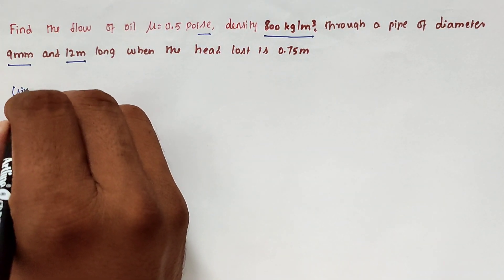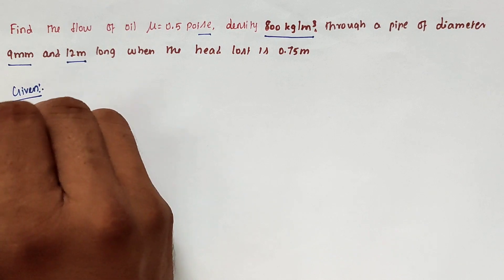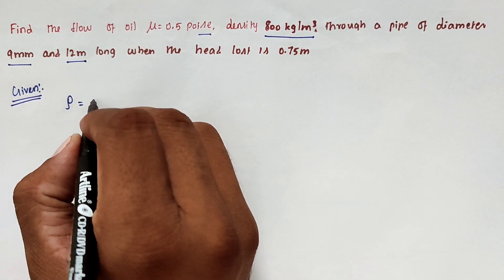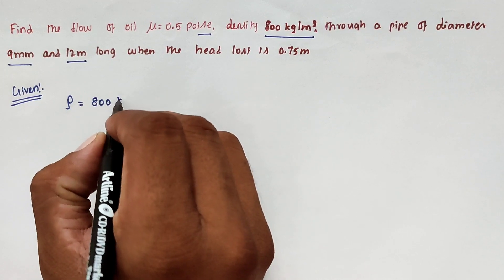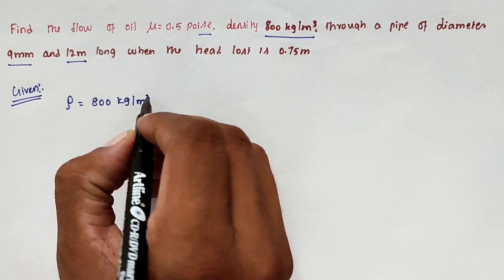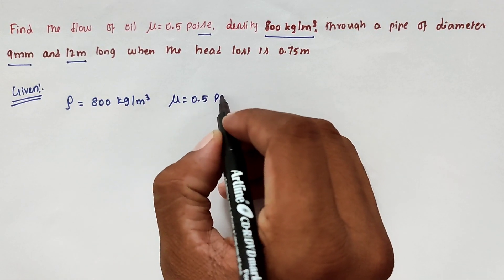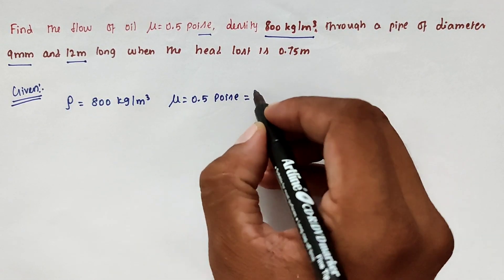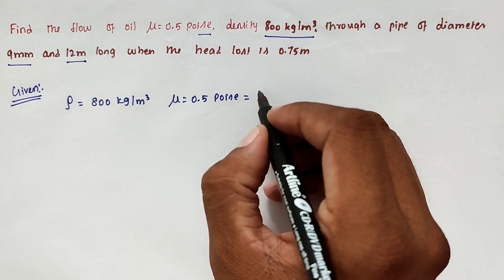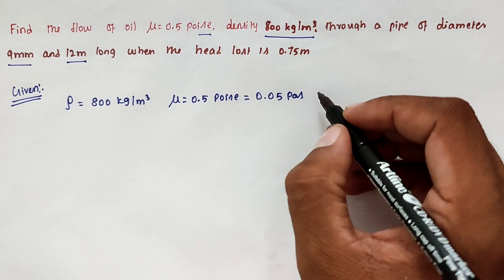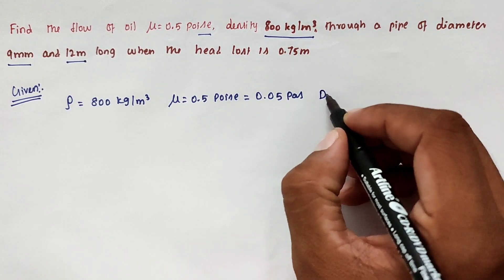So the given values: ρ equal to 800 kg per m cube, then μ equal to 0.5 poise that is equal to 0.05 pascal.